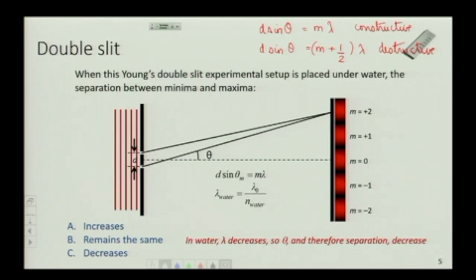If λ gets smaller, sin θ gets smaller because d is not changing. And if sin θ gets smaller, then each θ is smaller and therefore the fringes are closely spaced, more closely spaced.